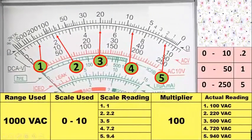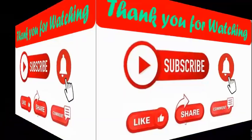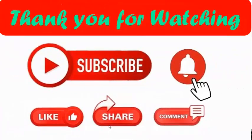To get the actual reading: 1 multiplied by 100 equals 100 VAC; 2.2 times 100 equals 220 VAC; number 3 is 5 times 100 equals 500 VAC; number 4 is 7.2 times 100 equals 720 VAC; the last one is 9.4 times 100 equals 940 VAC. That is the actual reading. Thank you for watching and God bless.